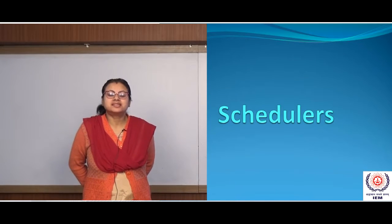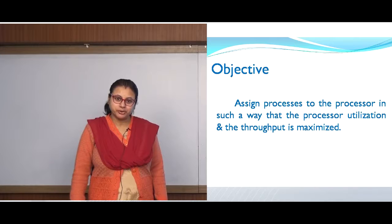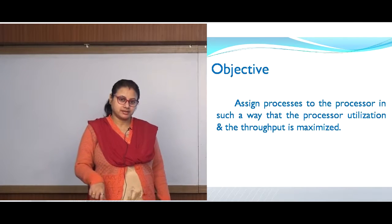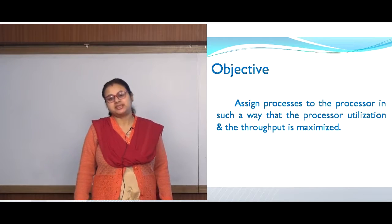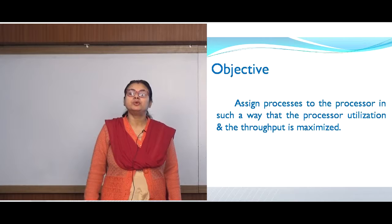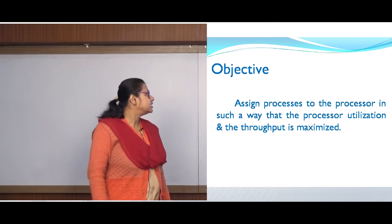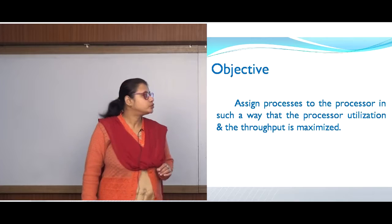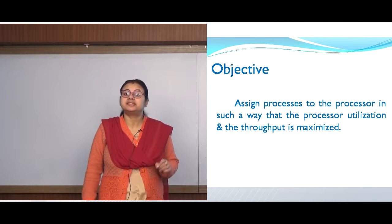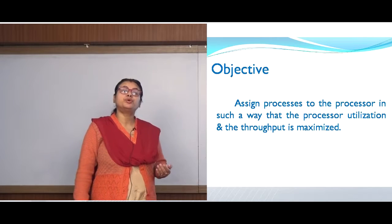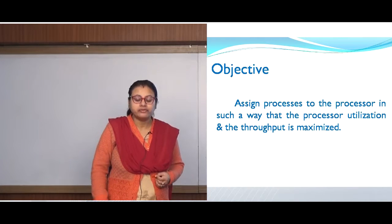Hello everybody. In this lecture I am going to discuss about different types of schedulers. The basic objective of a scheduler is to assign the processes to the processor inside the CPU in such a way so that the processor utilization and the throughput is maximized. We never want the CPU sitting idle, so always our intention should be to make the CPU busy. If the CPU is busy all the time, its utilization is very good and the throughput or outputs produced per unit time is also maximized.